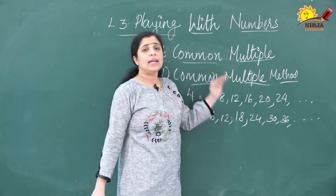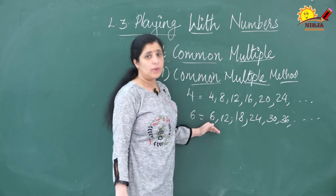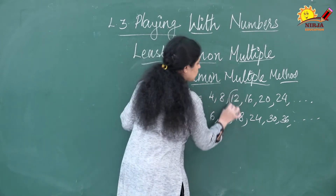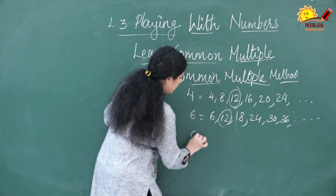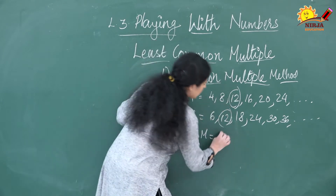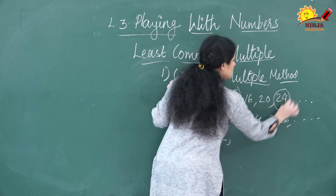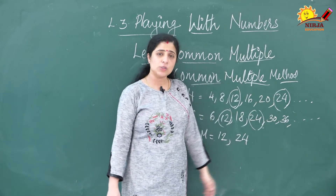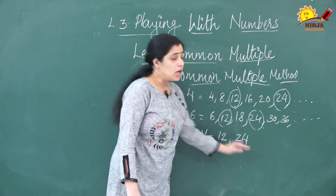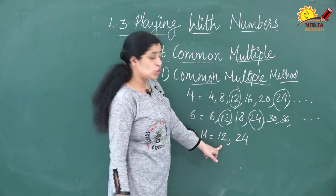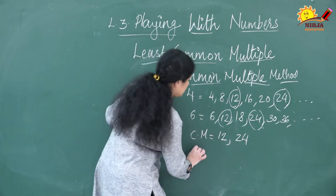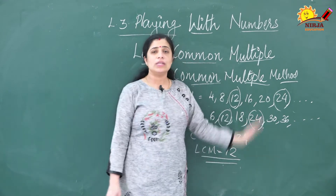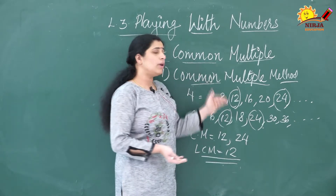Now we have to check if any common numbers are there in these two lists. You can see that 12 is common. So 12 is a common multiple, and the next common multiple is 24. It will go on because there are infinite common multiples. From this you can see that 12 is the smaller one. So the LCM of 4 and 6 will be 12. This is how you find the LCM using the common multiple method.